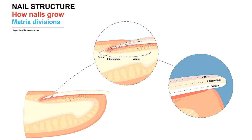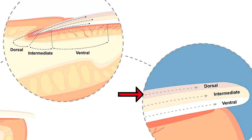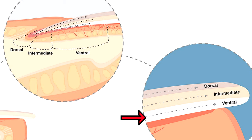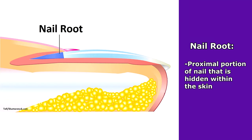The nail plate itself can be divided into three main layers: a dorsal or top layer, an intermediate or middle layer, and a ventral or bottom layer. And finally, we have the nail's root, which is just the proximal-most portion of the nail that is hidden within the skin.